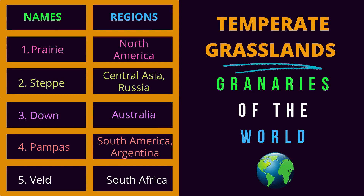Temperate grasslands have different names. Let's look at the different names and the regions where we can find them. First, prairie in North America. Second, steppe in Central Asia and Russia. Third, down in Australia. Fourth, pampas in South America and Argentina. Fifth, veld in South Africa.